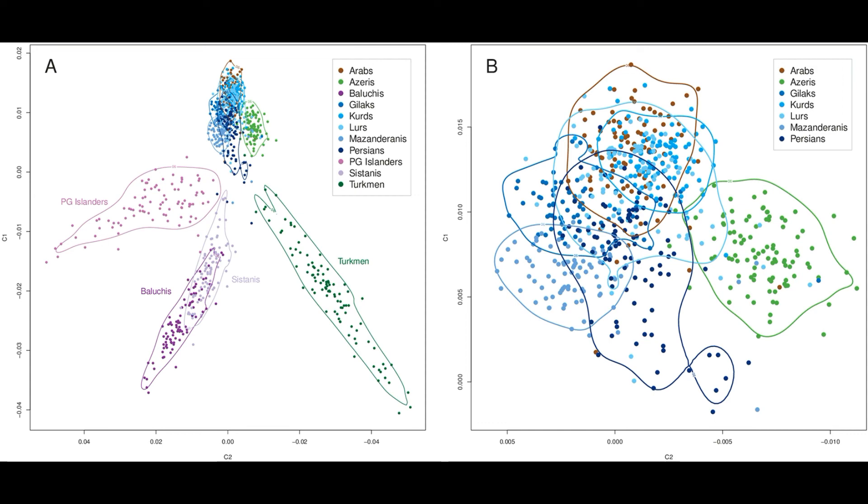The Arabs cluster in nicely with the Lurs and the Kurds. Both of these groups cluster in nicely with the Iranian Arabs, which proves that the Iranian Arabs are likely not of Arabian descent as previously believed but rather are mostly of native stock.